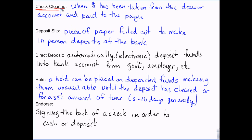A hold is when you make a deposit and the bank does not allow the funds to be available yet. The most common reason is an out-of-state check. If your grandma lives in Idaho and sends you a check in the mail and you go deposit it, because it's an out-of-state check they put a three- to seven-day hold on it. Basically, they're making sure the money comes from that other bank before they give it to you — they don't want to give you the money and then have it never arrive.